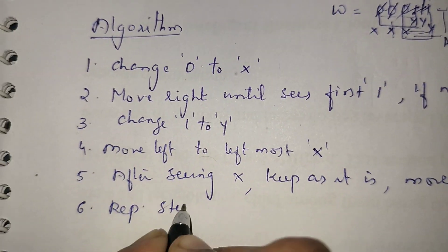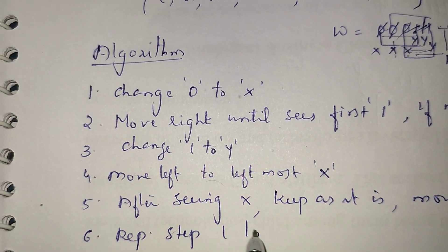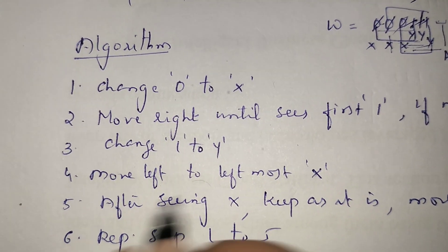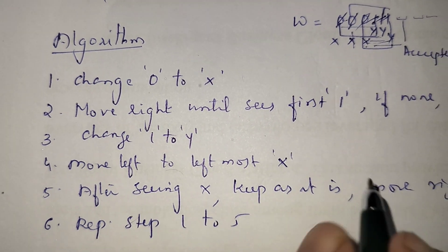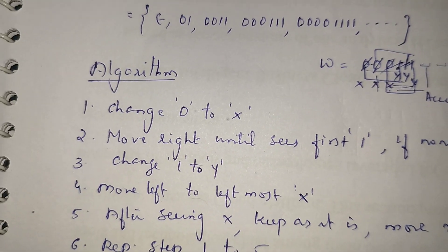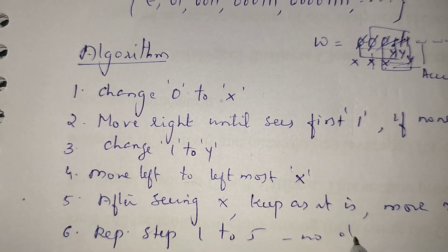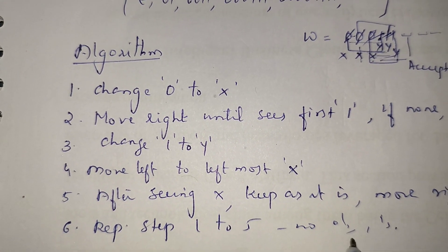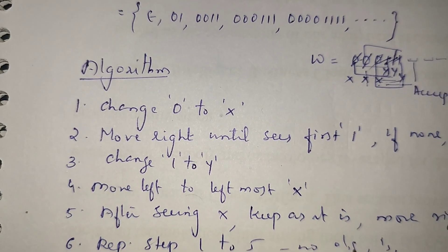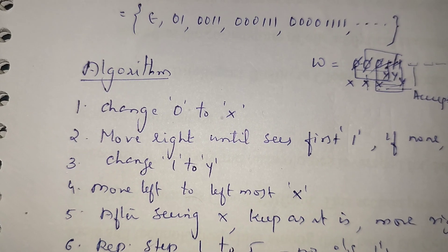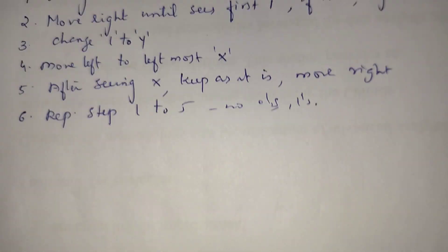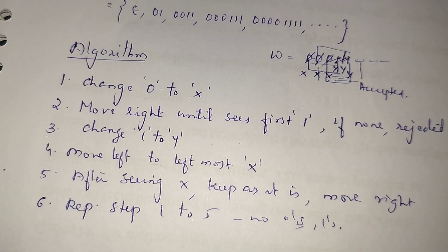Repeat steps 1 to 5. We need to repeat the steps until there are no more 0s and 1s left. I am just showing one example.